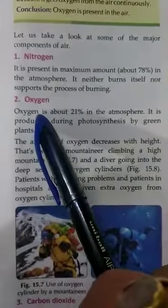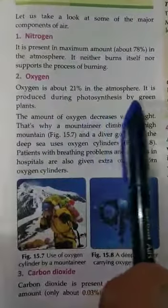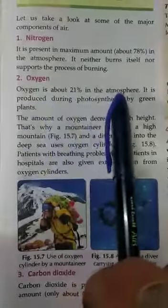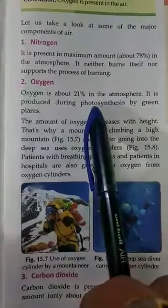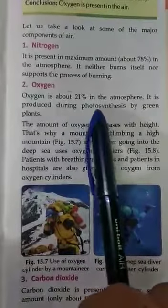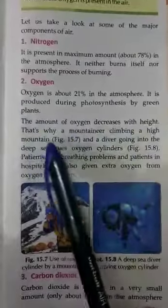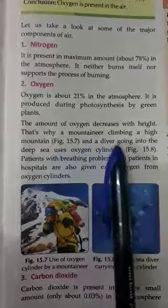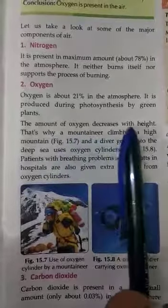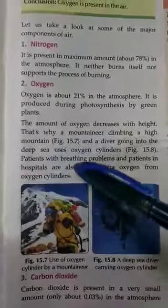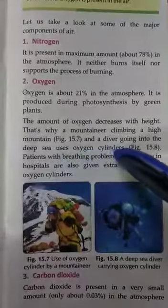Next is oxygen. Oxygen is about 21% in the atmosphere. It is produced during photosynthesis by green plants. When green plants carry out photosynthesis to make their food, oxygen is released. The amount of oxygen decreases with height. That is why mountaineers climbing high mountains and divers going into the deep sea use oxygen cylinders.